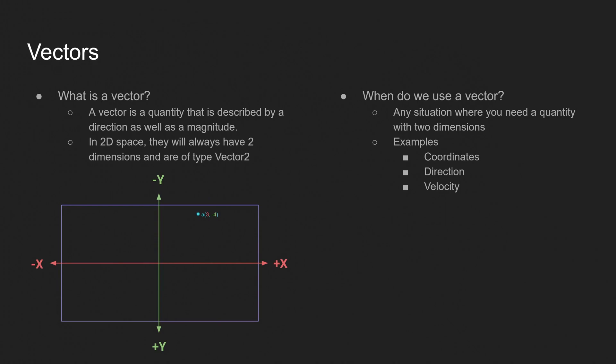What's a vector? A vector is a quantity that is described by a direction as well as a magnitude. In 2D space, they will always have two dimensions and are of type vector 2. So if you look down here on the little graph, you'll see that I've defined a vector a. And it has an x value because it's the first one there. It's always x, y when you define these. The x value is 3, which means we are over 3 units on the x. And the y value is negative 4, which means we are up 4 units on the y. And if you imagine a point here, coming up to this point, a line that intersects the two, that's where the directionality of the vector comes into play.